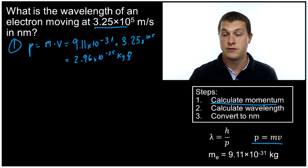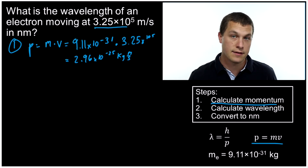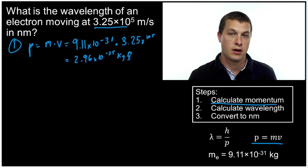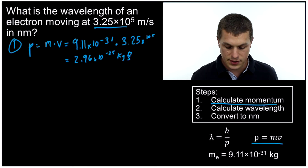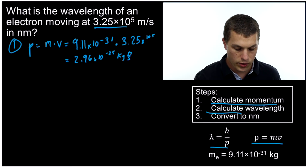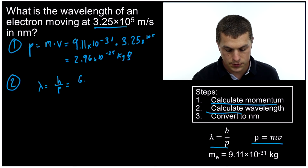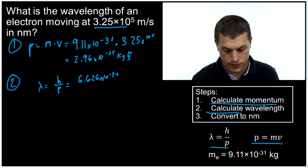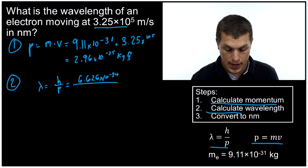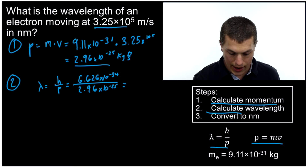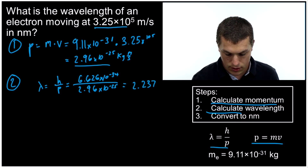It's important that whenever you calculate the mass for your de Broglie wavelength, you put in your mass in kilograms — that's the SI unit. There are secretly kilograms in Planck's constant, which we're about to use, so if you don't put your mass in kilograms, you'll get the wrong answer. So we have the momentum. Step two is calculate the wavelength. The wavelength is equal to Planck's constant over our momentum. Planck's constant is 6.626 times 10 to the minus 34 joule seconds, divided by our momentum of 2.96 times 10 to the minus 25. Plugging that into a calculator, we get 2.237 times 10 to the minus 10 meters.